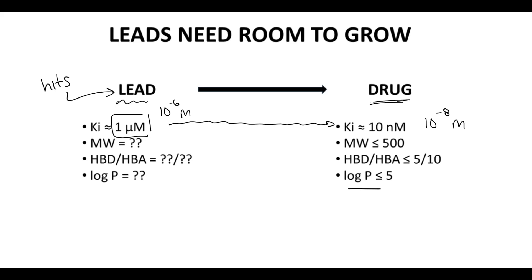So if we want to finish with a drug, and to make that transition we're going to add groups, then our lead better be smaller in terms of molecular weight, smaller in terms of hydrogen bond donors and acceptors, and smaller in terms of log P. This is why when we think of a lead, we want smaller molecules that we will grow into a full drug.